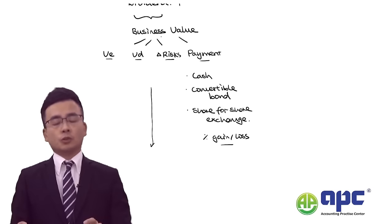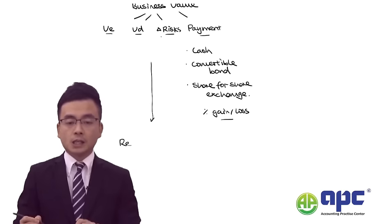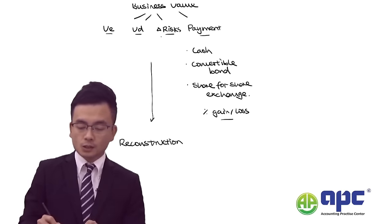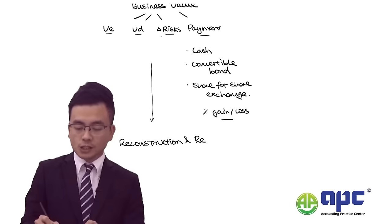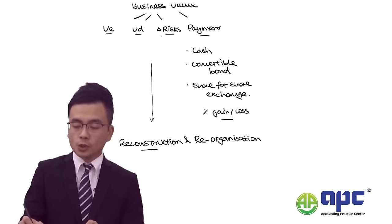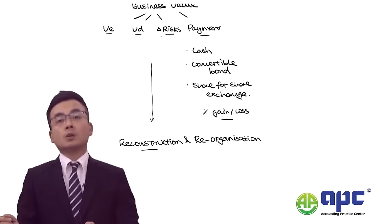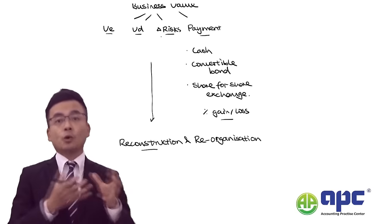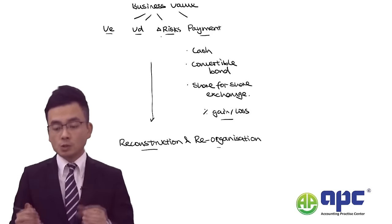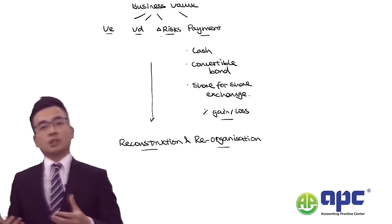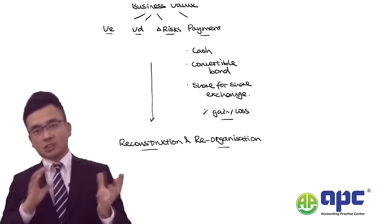We need to calculate the percentage of gains or losses from each payment method. If the business is not doing a good job, we will need to think about reconstruction and reorganization — saving the business using debt-for-equity swap, or reorganizing by following corporate governance laws and regulations.